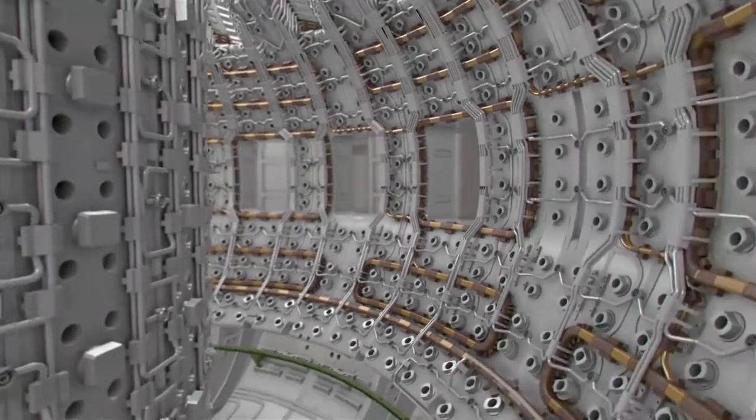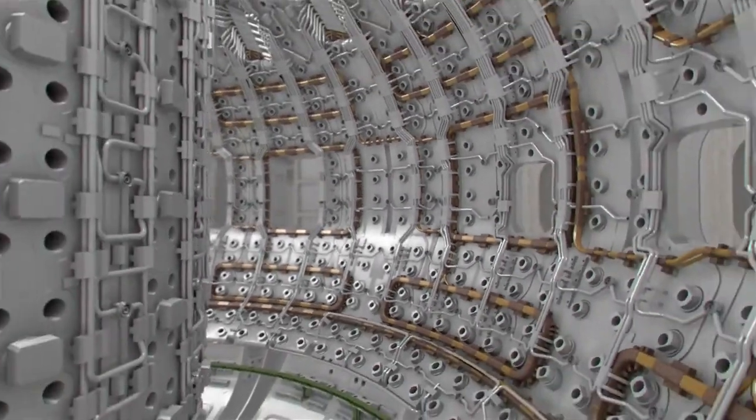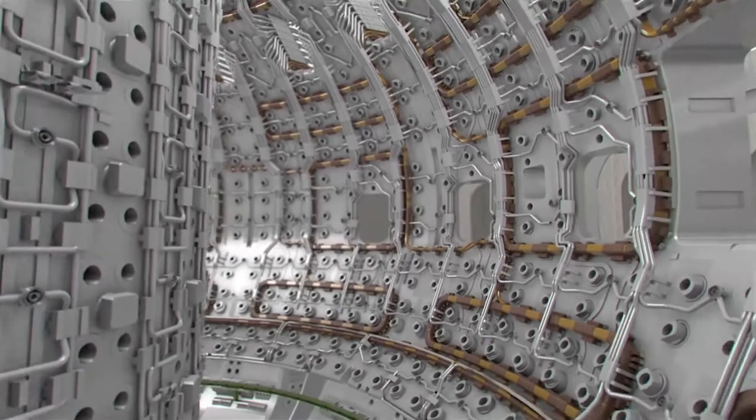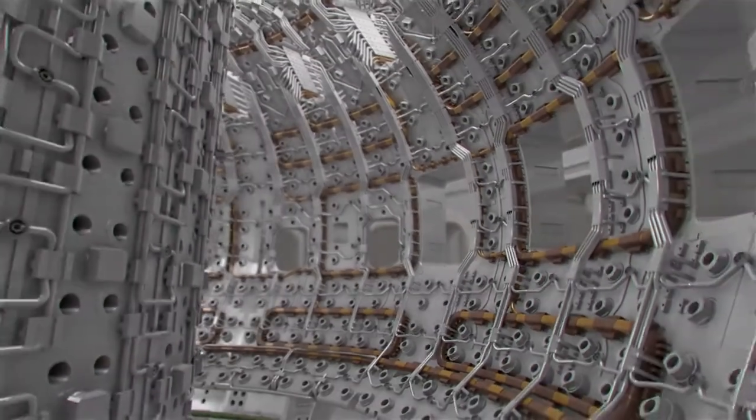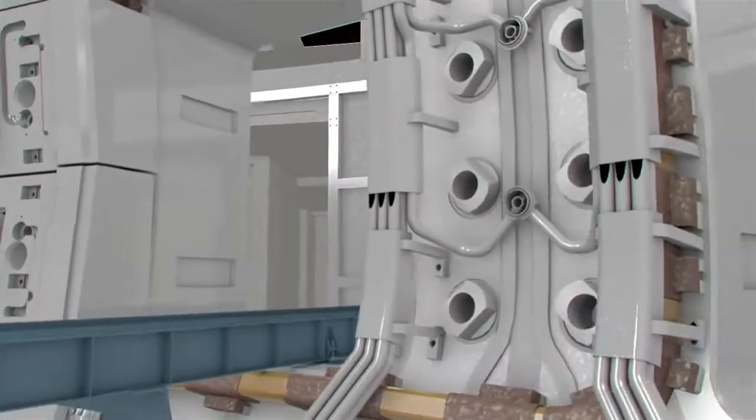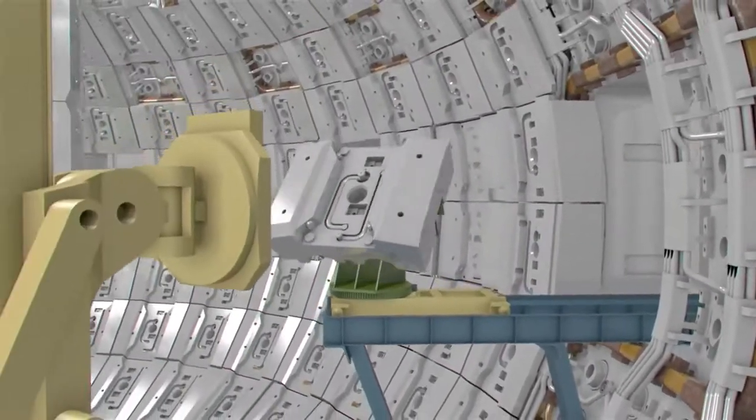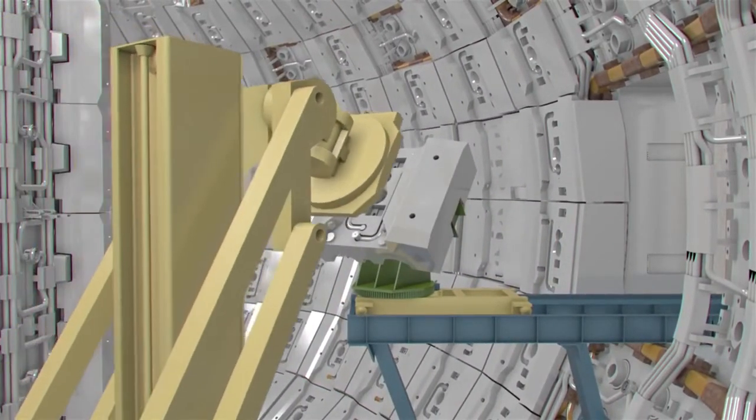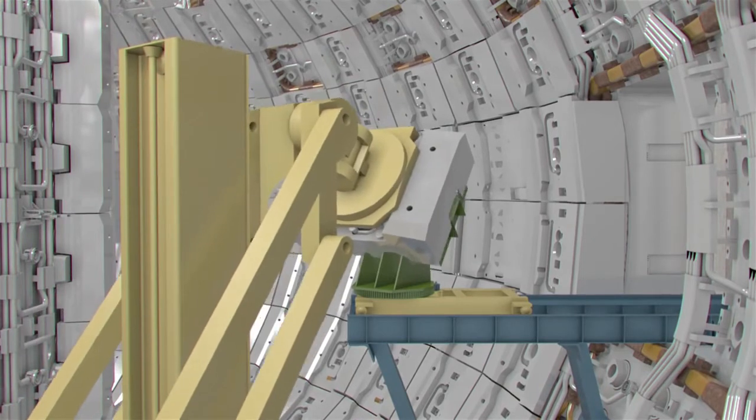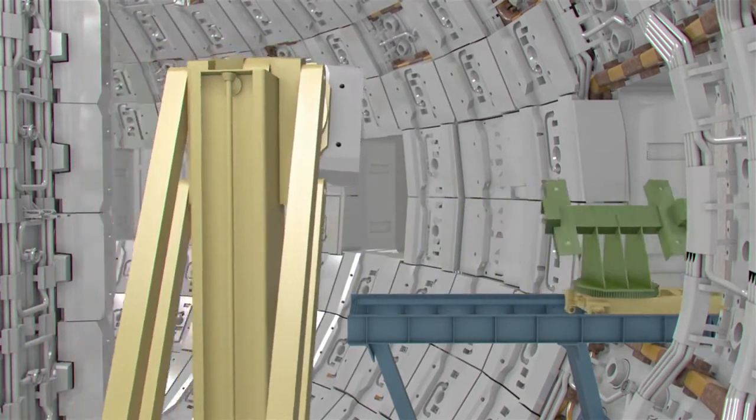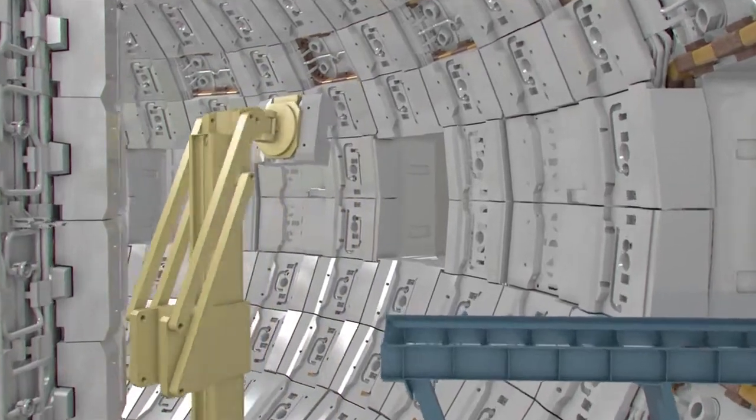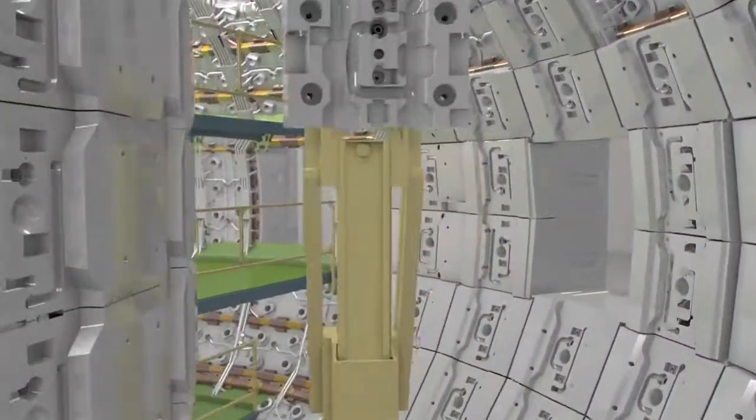After this first commissioning of the ITER machine and following the installation of the final diagnostic systems, pellet injection and disruption mitigation system, the stage is set for the installation of the blanket system that provides shielding to the vessel and the superconducting magnets from the heat and neutron fluxes of the fusion reaction. For purposes of maintenance, the blanket wall is modular. It consists of 440 individual segments, each measuring 1 by 1.5 meters and weighing up to 4.6 tonnes.